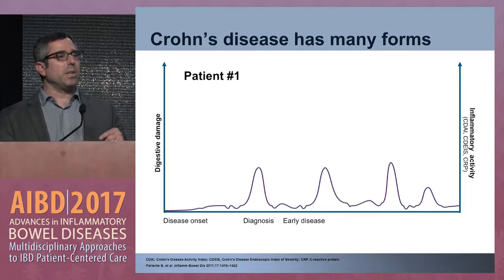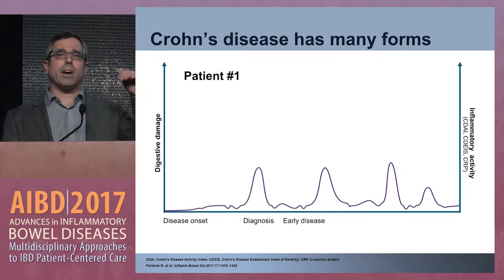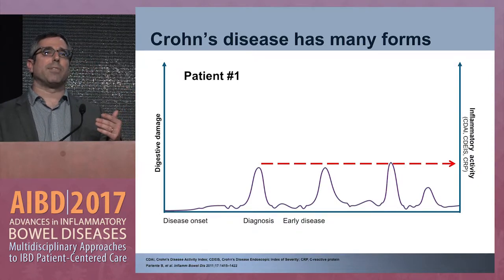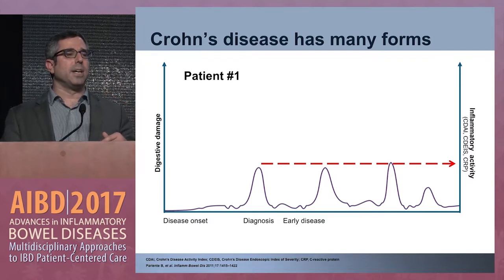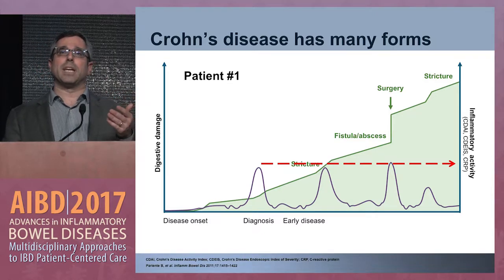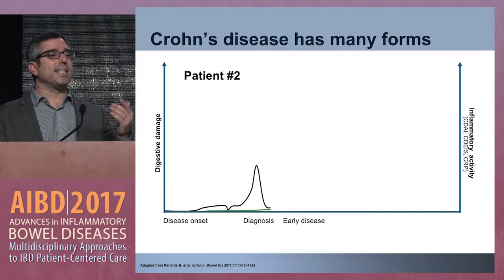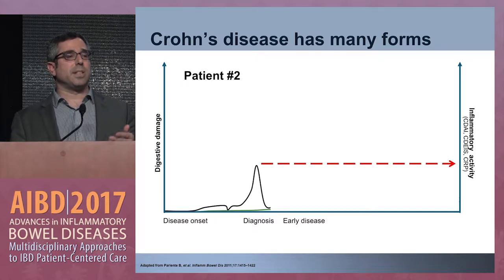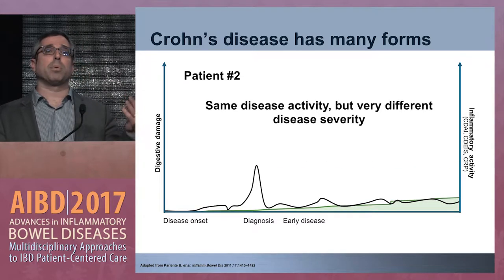The thing we struggle with is preventing the progression of disease severity. To re-emphasize this point: one patient has varying disease activity and in between flares their disease is getting worse over time, accumulating more complications until medications won't work — we've missed that window of opportunity. Another patient has the same disease activity at a given office visit, but their course is very different — they don't have significant flares over time and never progress.